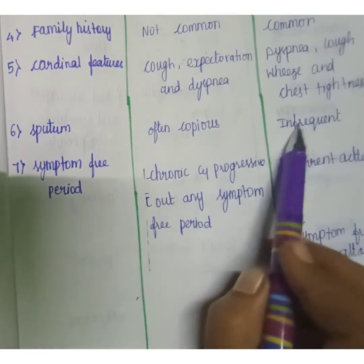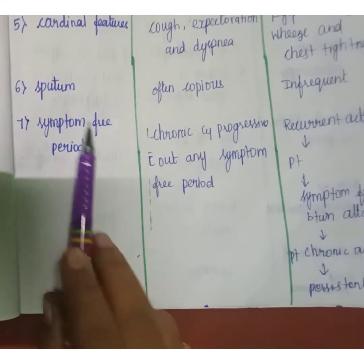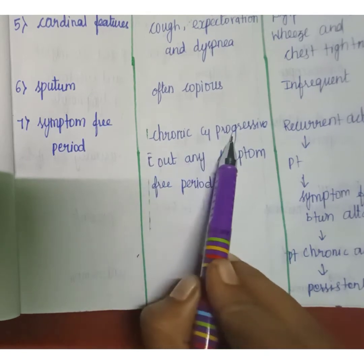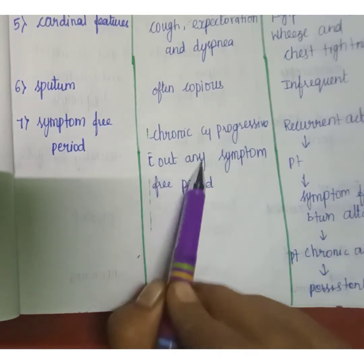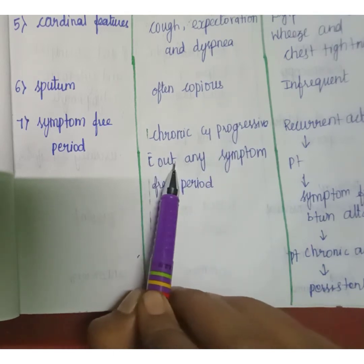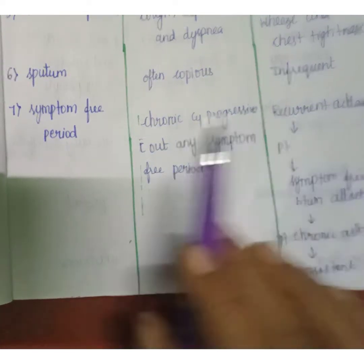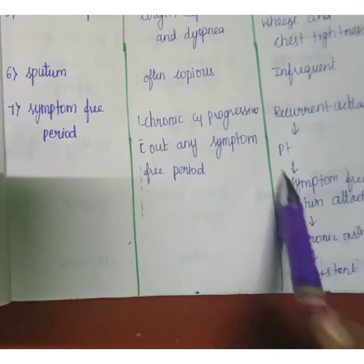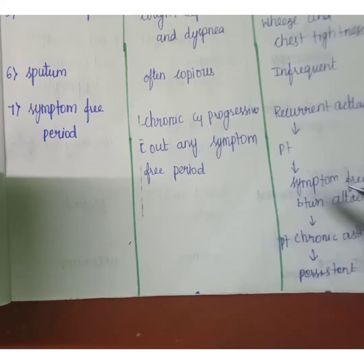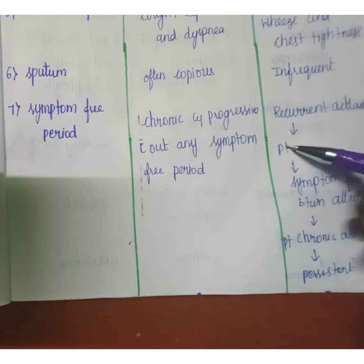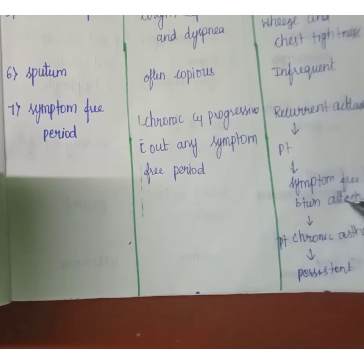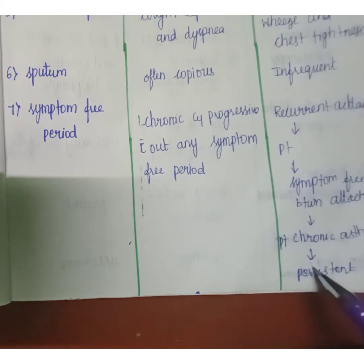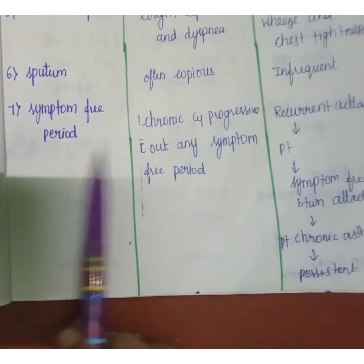Regarding sputum, in COPD it is often copious, while in asthma sputum is infrequent. For symptom-free periods, COPD is chronic and progressive without any symptom-free period. In asthma, there may be recurrent attacks with the patient feeling symptom-free in between, though some patients may have chronic persistent asthma.